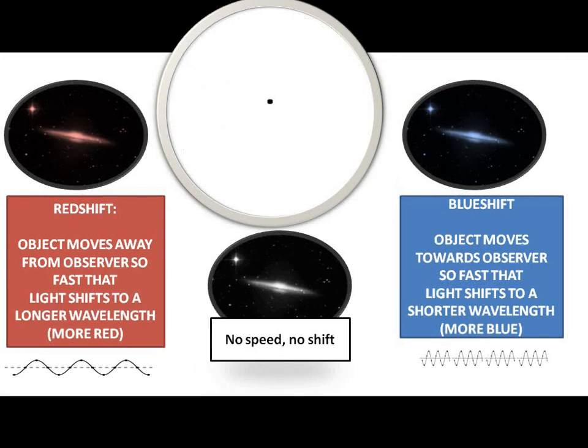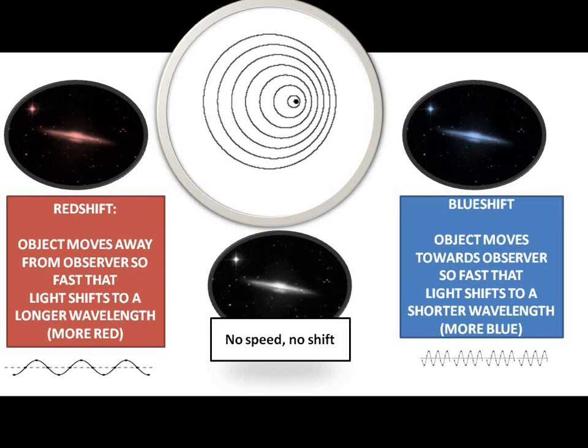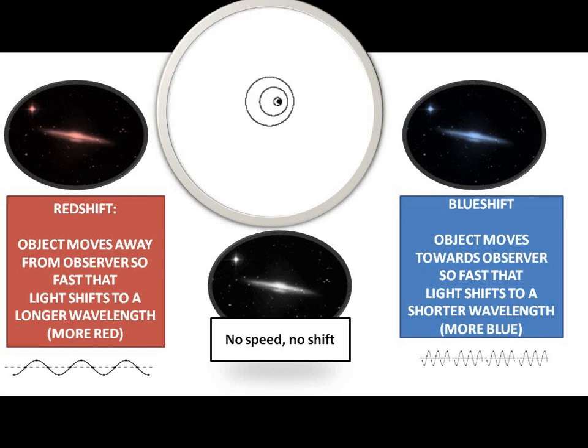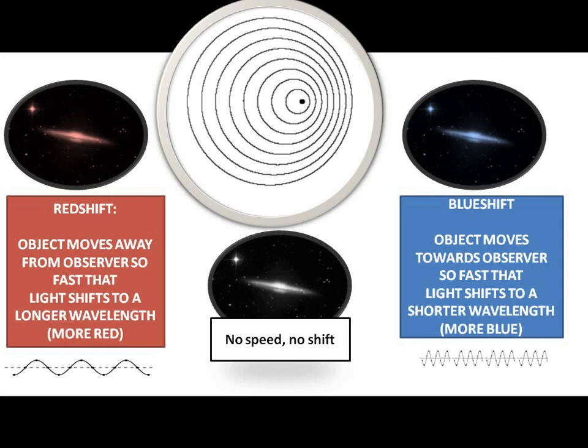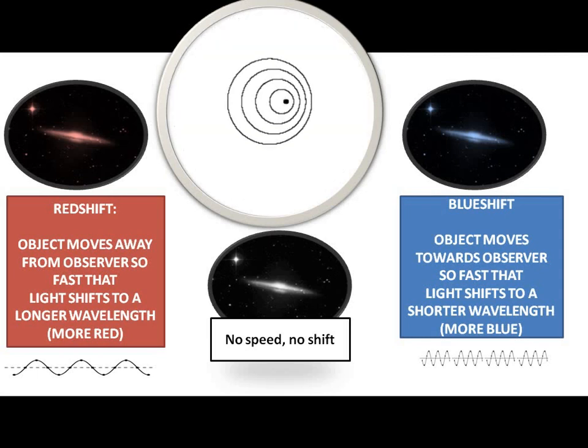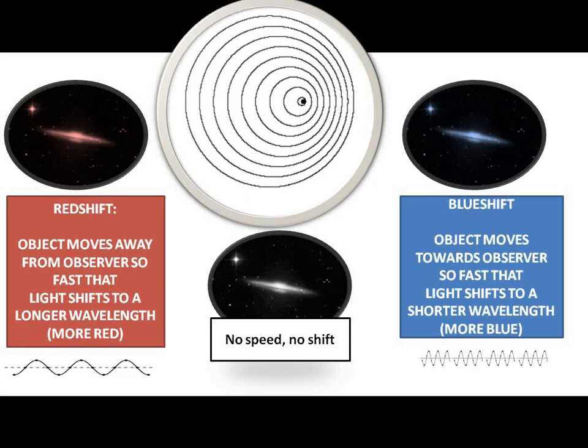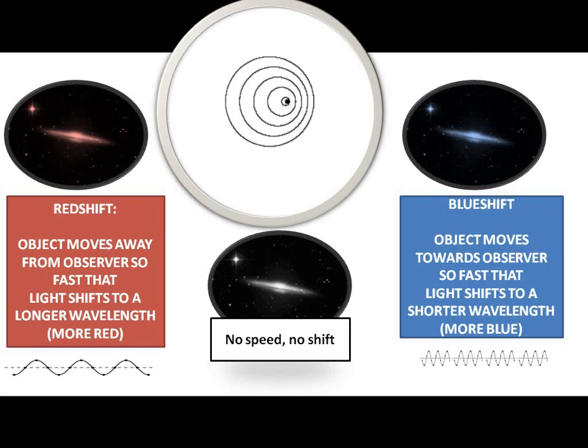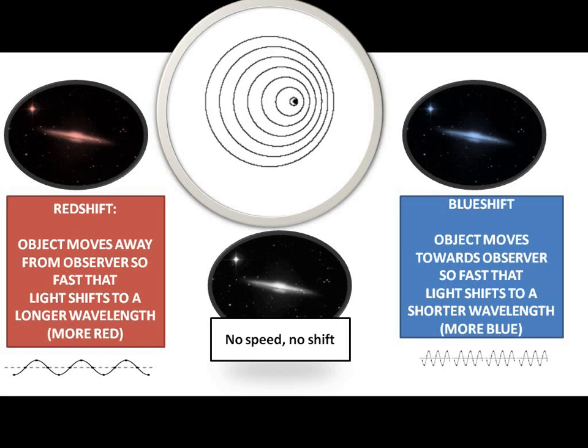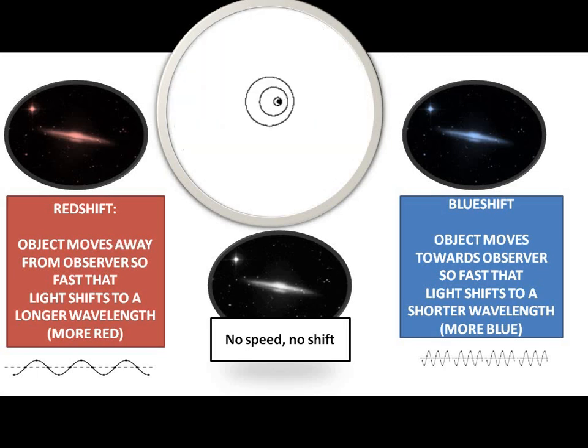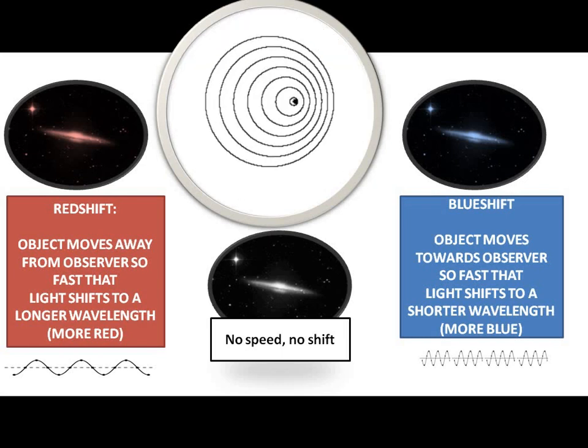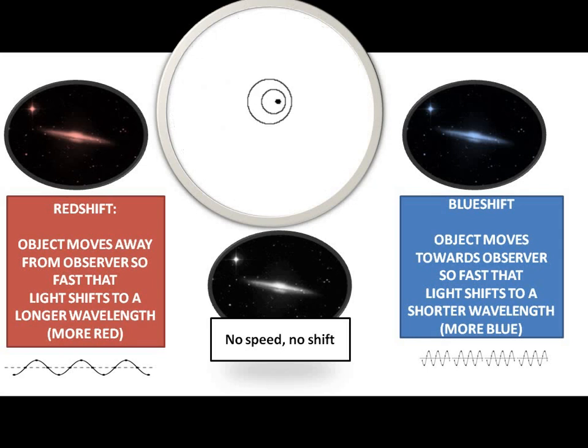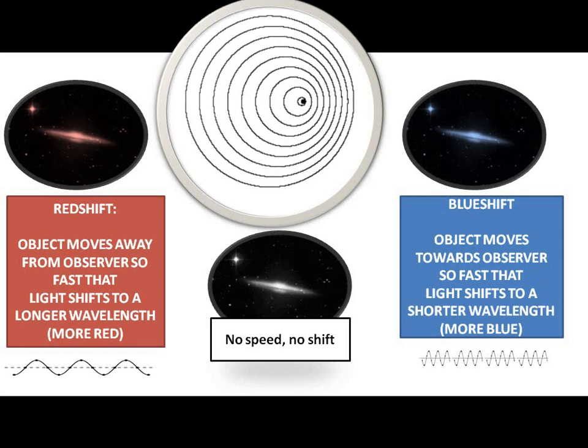So, we could say, in summary, a proper way to say this would be, redshift is when an object is moving away from the observer, that's us, so fast that light shifts to a longer wavelength, more red, that's the redshift. Now, I should also say, and this is equally true, that that galaxy, yeah, it's going away from us, but we could be going away from it. You know, it's relativity. Who's to say who's moving? It doesn't really matter. One object's moving away from another, it's going to be redshifted. If the galaxy is sitting there with no speed, there's no shift. It's just stationary. And if it's pumping towards us really, really fast, an object moves towards the observer, or the observer towards it, so fast that light shifts to a shorter wavelength, so it's going to be more blue.